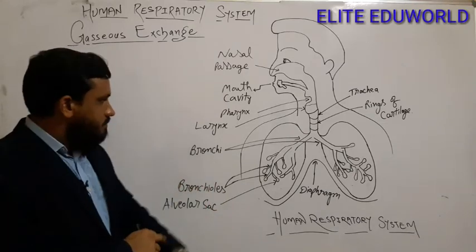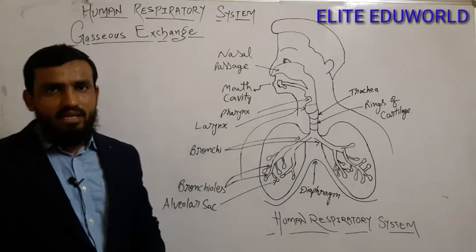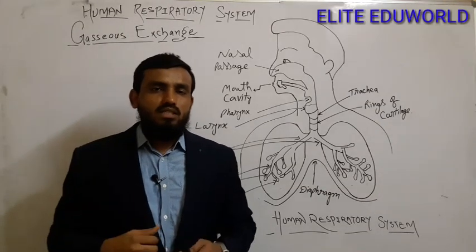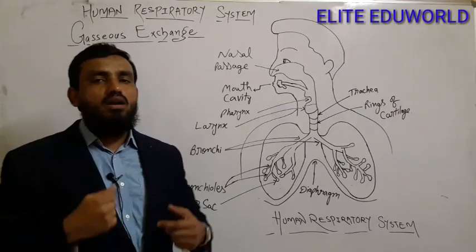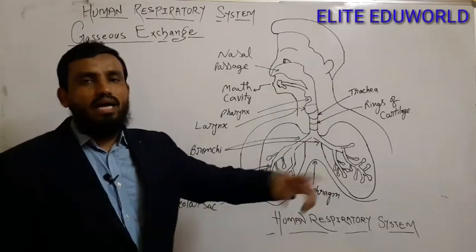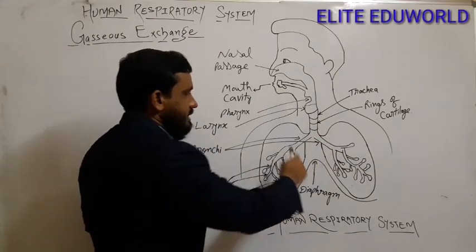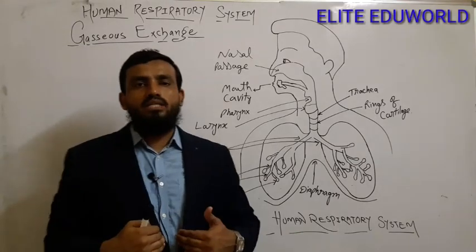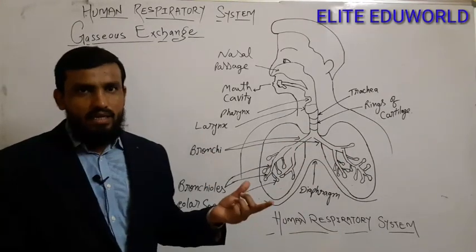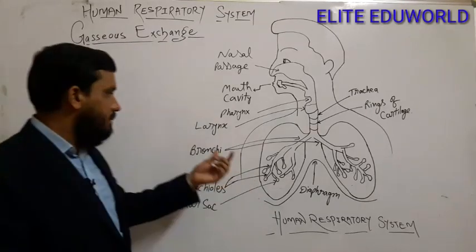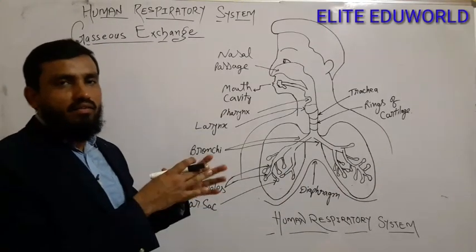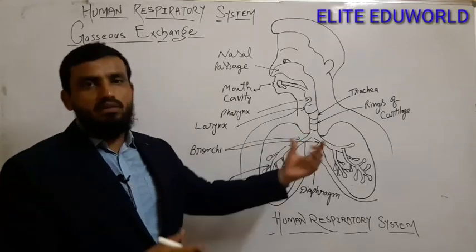After that the air enters the thoracic cavity — also called the chest cavity — where the lungs and heart are situated. As the trachea enters the thoracic cavity, it divides into two parts called the bronchi, because we have two lungs and air has to be provided to both of them.